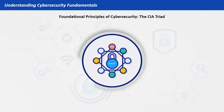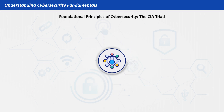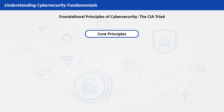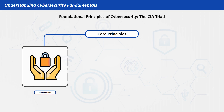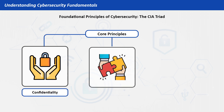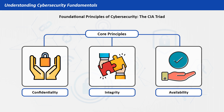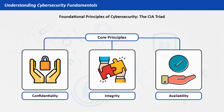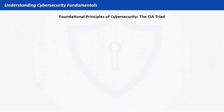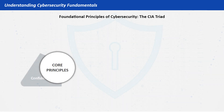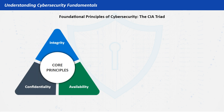Foundational Principles of Cybersecurity — The CIA Triad. The core principles of cybersecurity focus on three main concepts: confidentiality, integrity, and availability. These principles, known as the CIA Triad, are essential for keeping systems and data safe. Let's look at each of these principles and see why they are important.